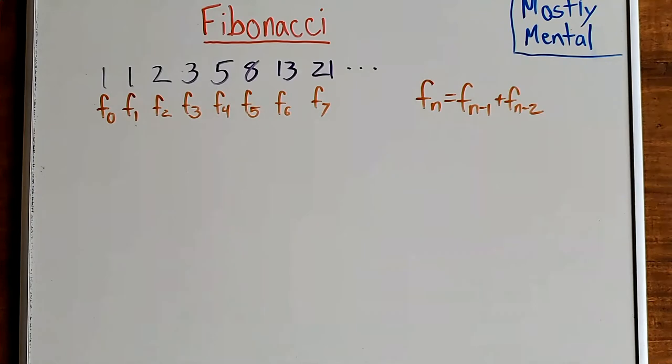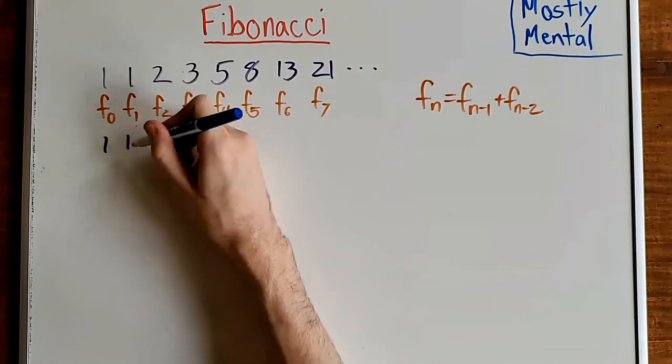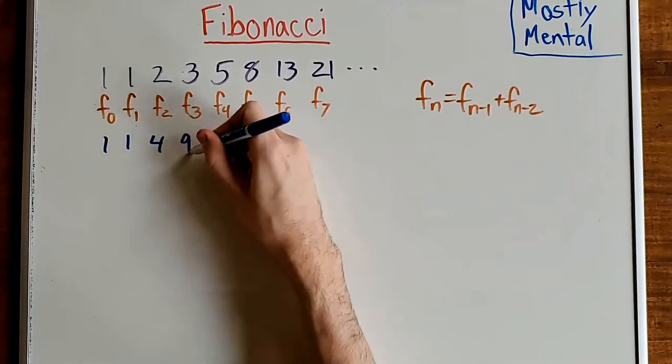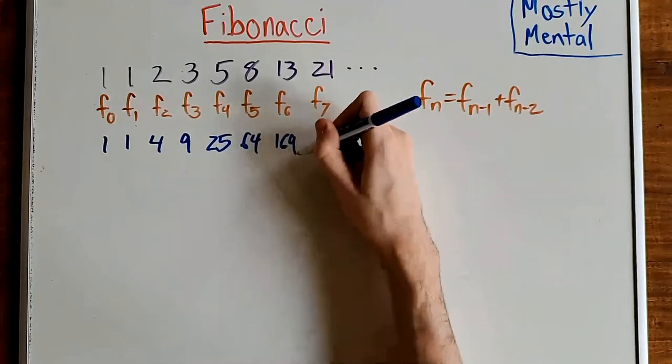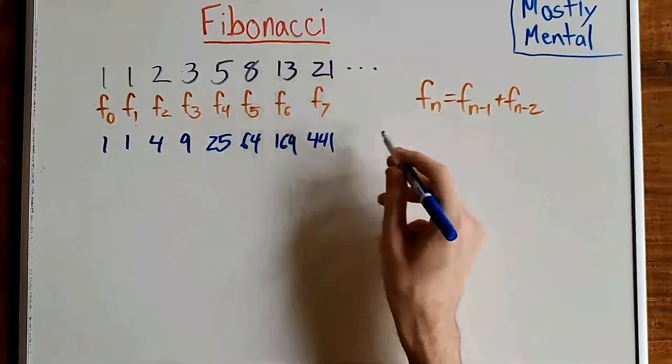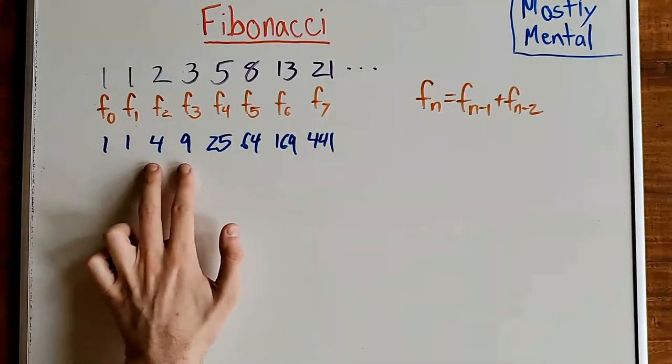Let's try another example. Let's take the Fibonacci numbers and square them. So we get 1, 1, 4, 9, 25, 64, 169, 441, and so on. What happens if we add consecutive pairs?